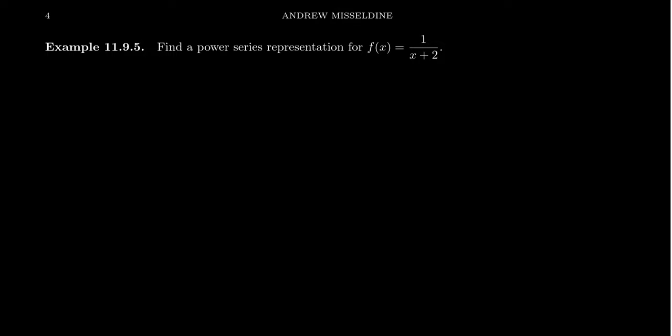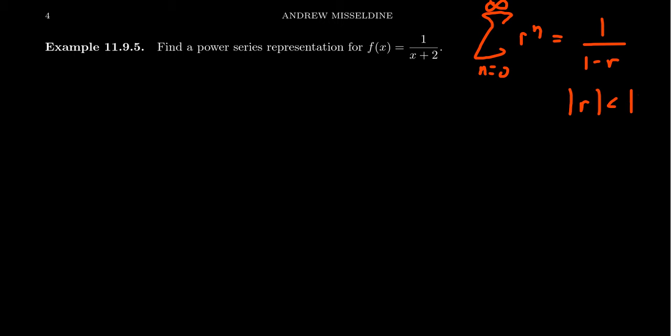In this video, we're going to find a power series representation for the function f(x) = 1/(x+2). The whole basis of this power series representation for a rational function is to play off of the geometric series formula: the sum as n goes from 0 to infinity of r^n equals 1/(1-r), so long as the absolute value of r is less than 1.